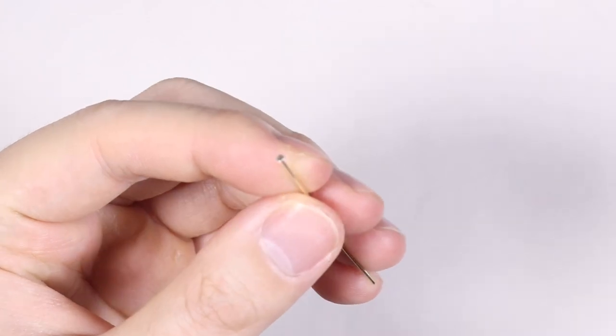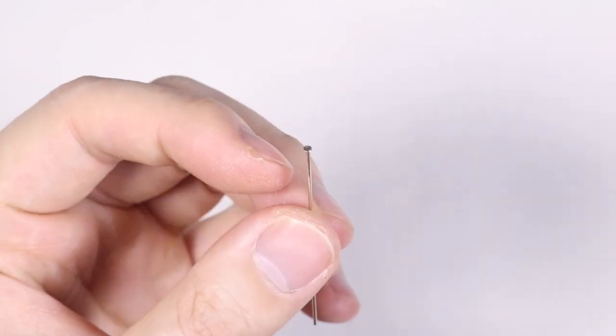So to make the apple shape, I made sure I had a pin that was flat on one end, and that's so I can make the indent.